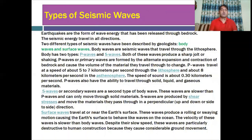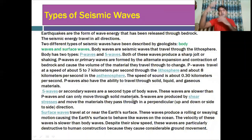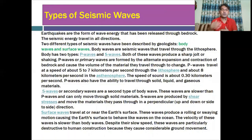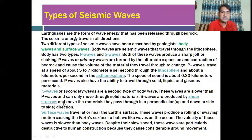S waves, or secondary waves, are the second type of body waves. These waves are slower than P waves and can only move through solid material — they don't have the ability to pass through gaseous or liquid material. S waves are produced by shear stress and move material they pass through in a perpendicular, up-and-down direction.